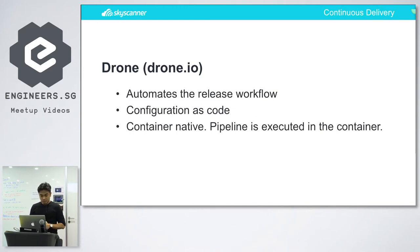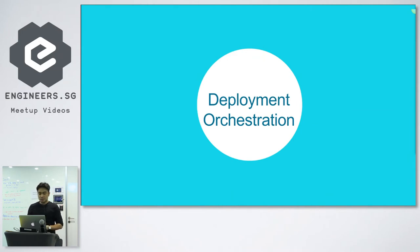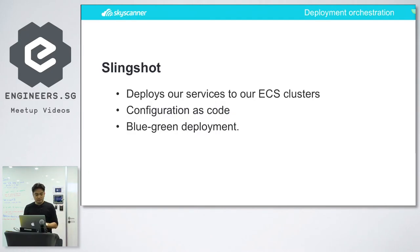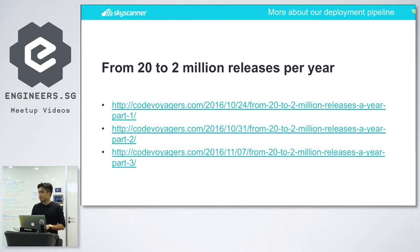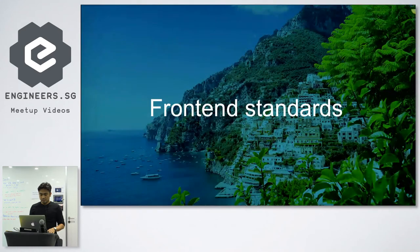After you build your app in the deployment pipeline, you need something to deploy it across different clusters in AWS. For example, if you're using ECS, we have this internal tool we call Slingshot that allows us to deploy across ECS clusters. I won't dive into that, but I do have some articles in the references — it's a three-part article that our former CTO wrote where you can probably learn a few things.